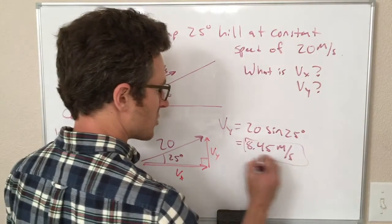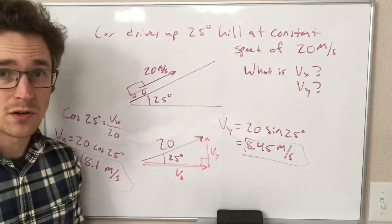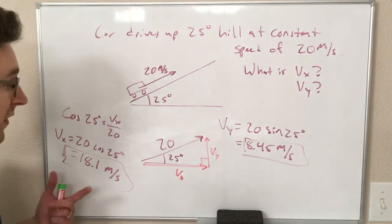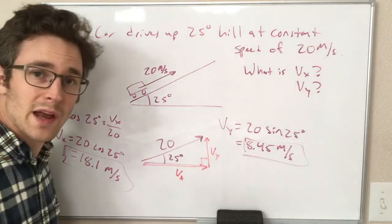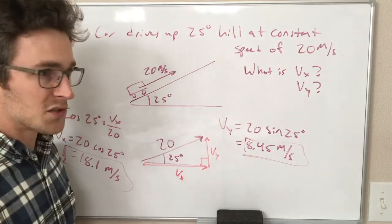So that is the answer to this question. We can do a quick check of this answer. One thing we can do is see if that squared plus that squared equals this squared. Check the Pythagorean theorem, and it does work,